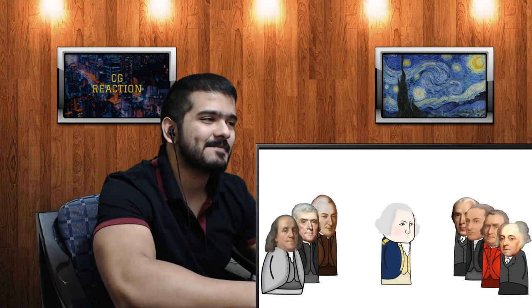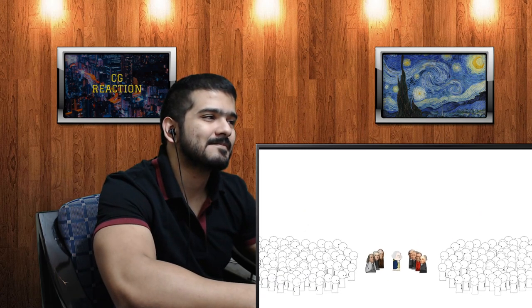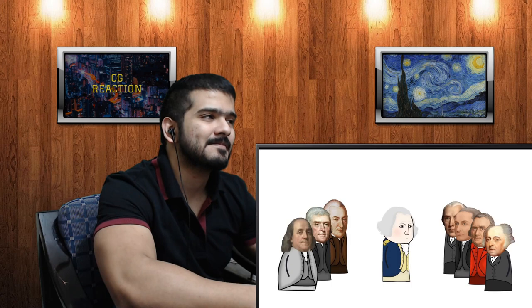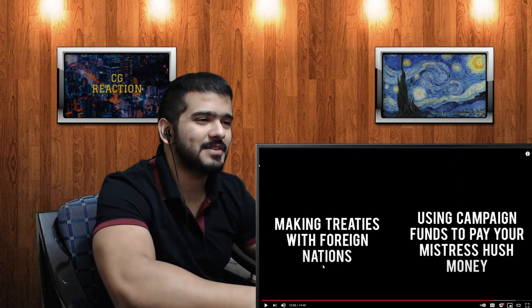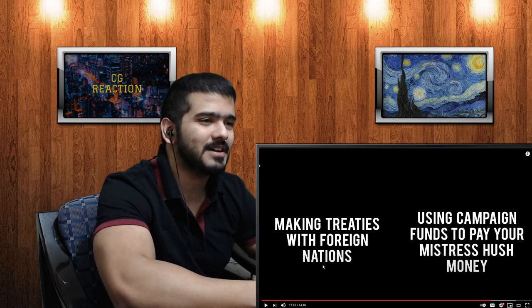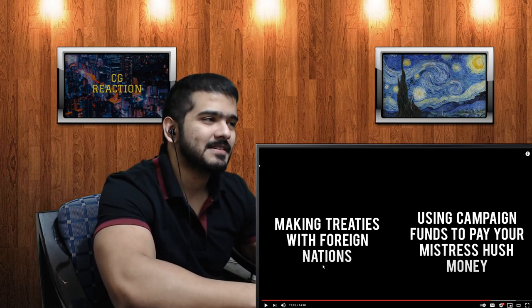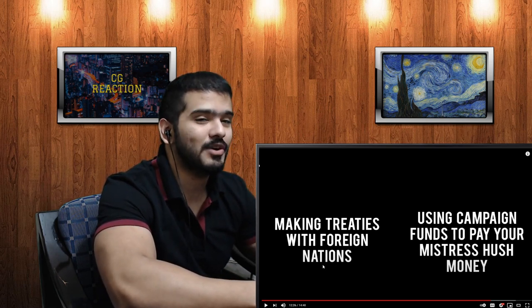Washington bid his men farewell, saying he most devoutly wished that their latter days might be as prosperous and happy as their former ones had been glorious and honorable. He hoped to live out the rest of his days in peace, but unfortunately a number of people - literally everyone - wanted him to be the first leader of the new country. The first election campaign in American history was basically a grassroots effort to convince Washington to accept the office. He was sworn in on April 30th, 1789. At first it seemed like he wanted to lead, but I guess he just wanted to lead the revolution - that's it.